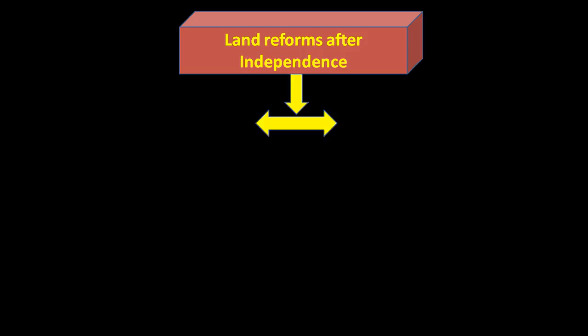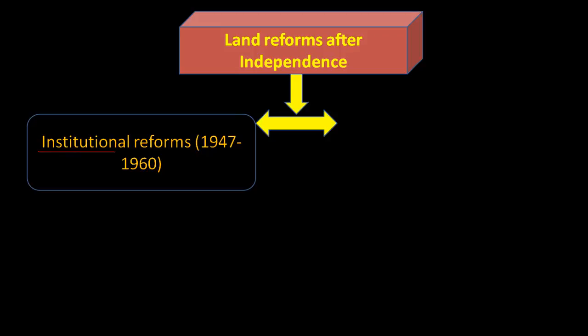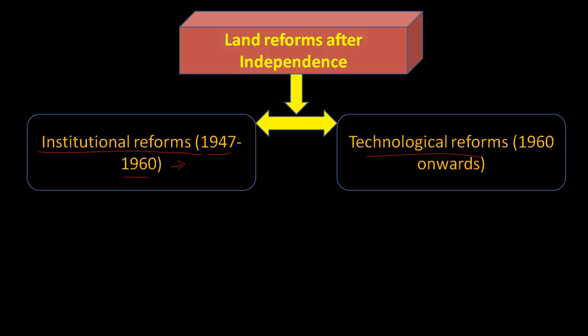There are two kinds of land reforms, which we can divide chronologically for convenience. First are the institutional reforms, roughly from 1947 to 1960, though they continued later as well. Secondly, we have technological reforms, which occurred before 1960 also but majorly occurred after 1960.